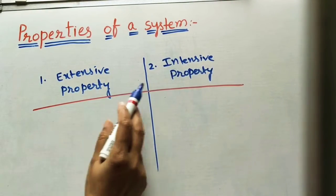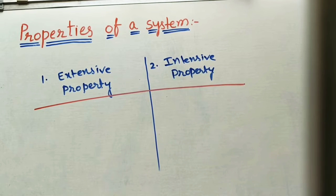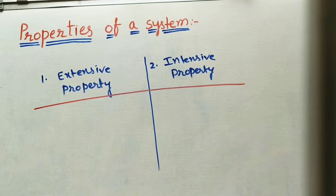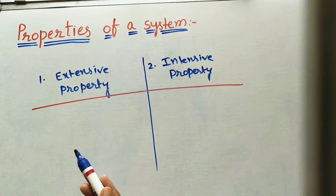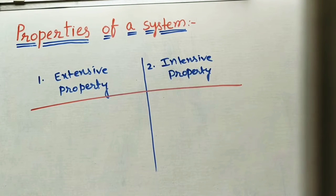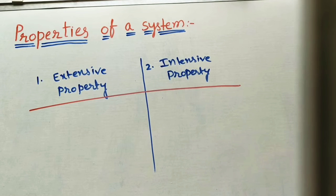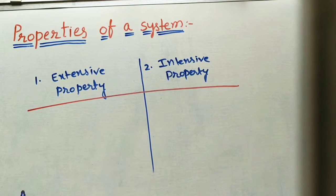There are two types of thermodynamic properties of a system: one is extensive property, and the second one is intensive property. What are the differences between these two properties? How to remember which property temperature is and which property volume is? Before taking those examples, first I will tell one main difference between these two.